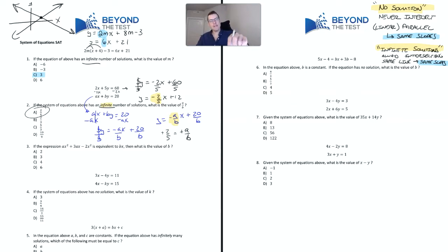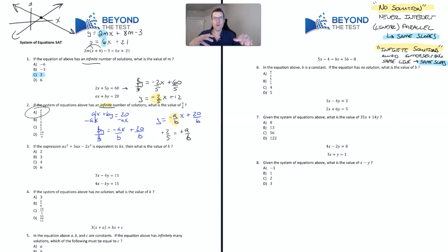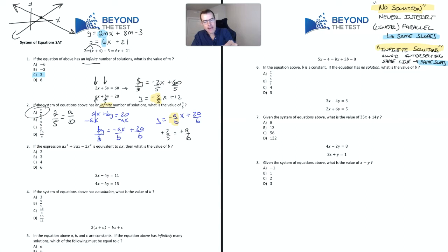Here's a shortcut. If you have infinite solutions or no solutions and everything is lined up — x terms aligned, y terms aligned, numbers on the other side of the equal sign — the ratio of the coefficients between the x terms and y terms must be the same. So you can literally just read off: 2 is to 5 as a is to b, giving you the answer immediately.